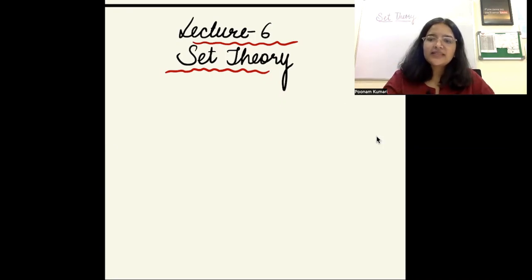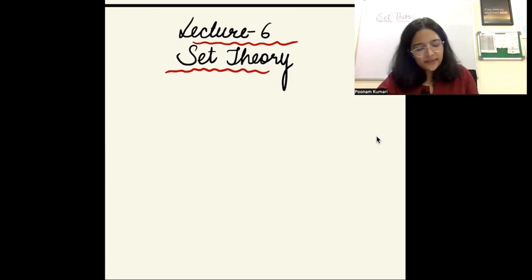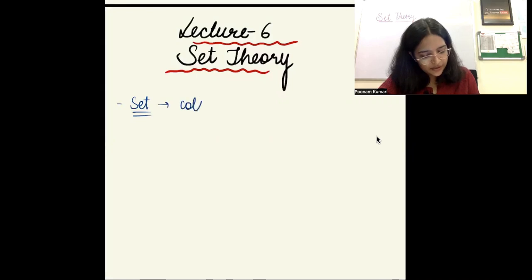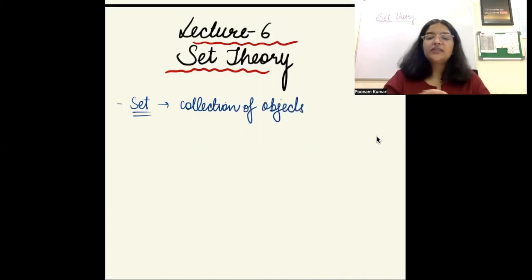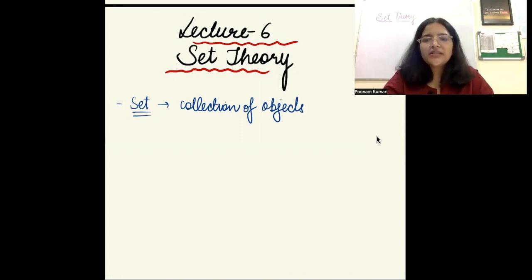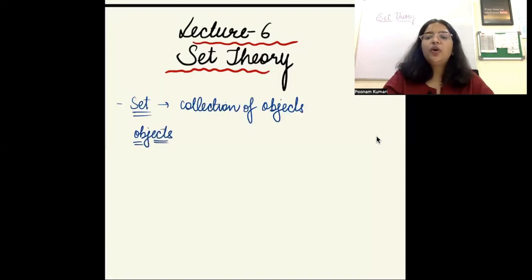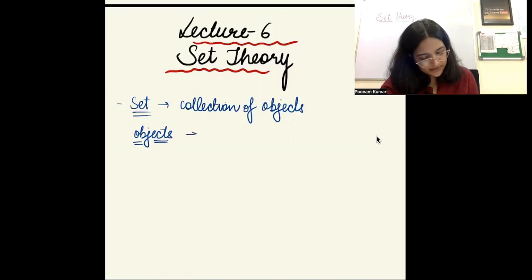So let's get started with the basics of set theory. A set is basically a collection of objects — it could be numbers, words, items — any collection of any kind of object is called a set. The objects that are members of a set are called elements or members of the set.